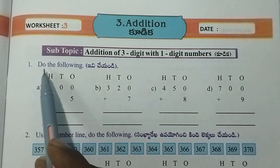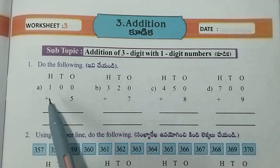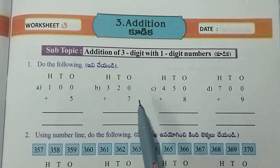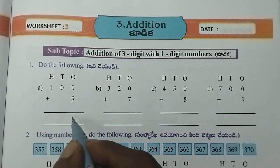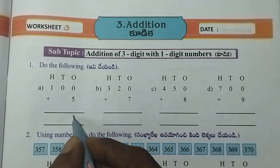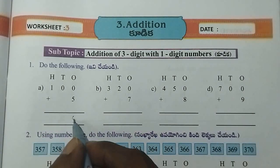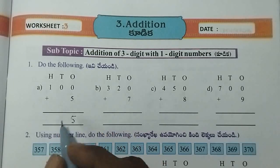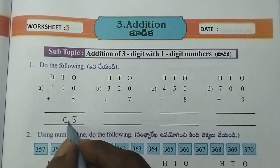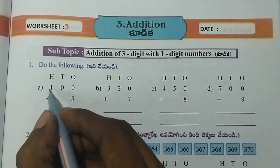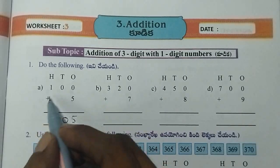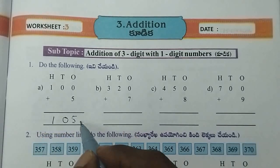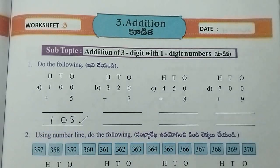Here we have to do the following. Here we have 0 plus 5. 0 plus 5 equals 5. Here we have 0. Here we have 1. Here we have 100 plus 5 equals 1 at 5.